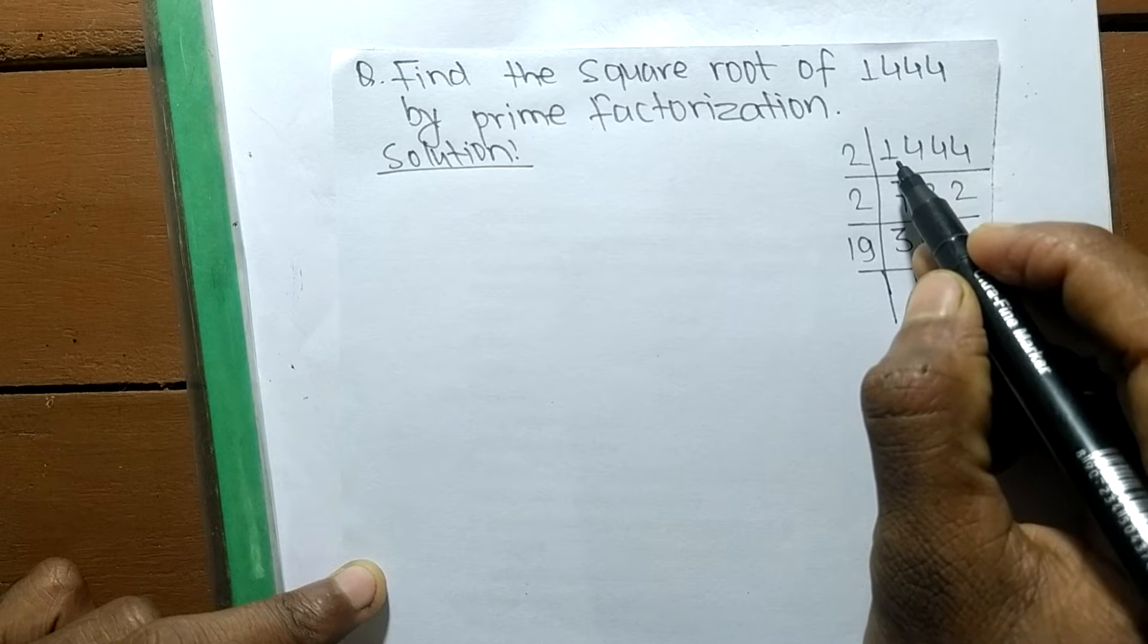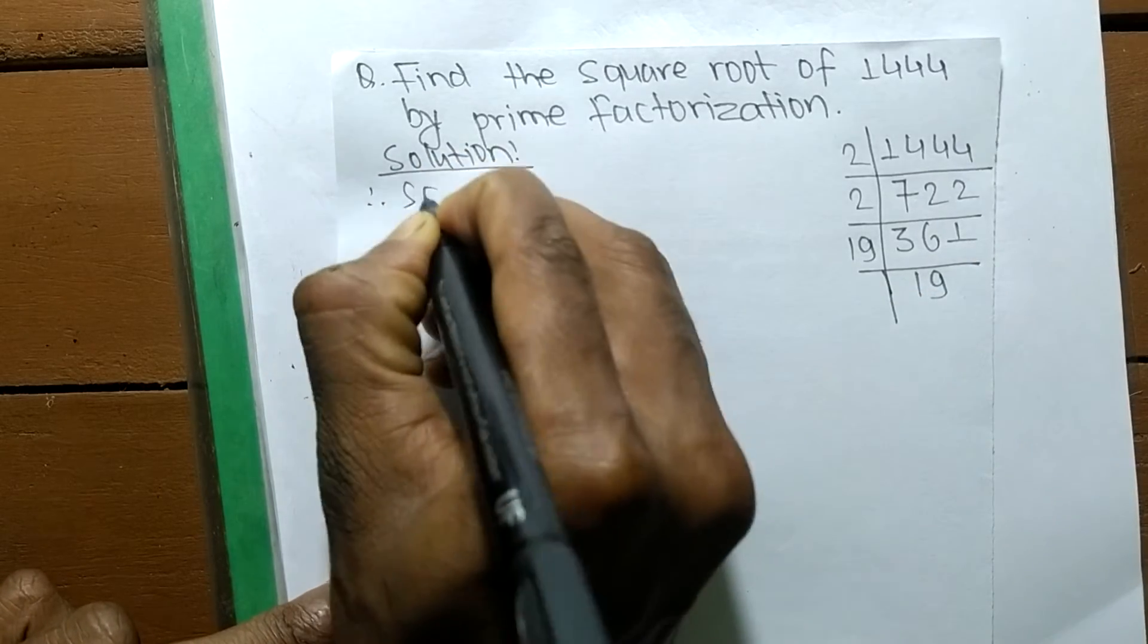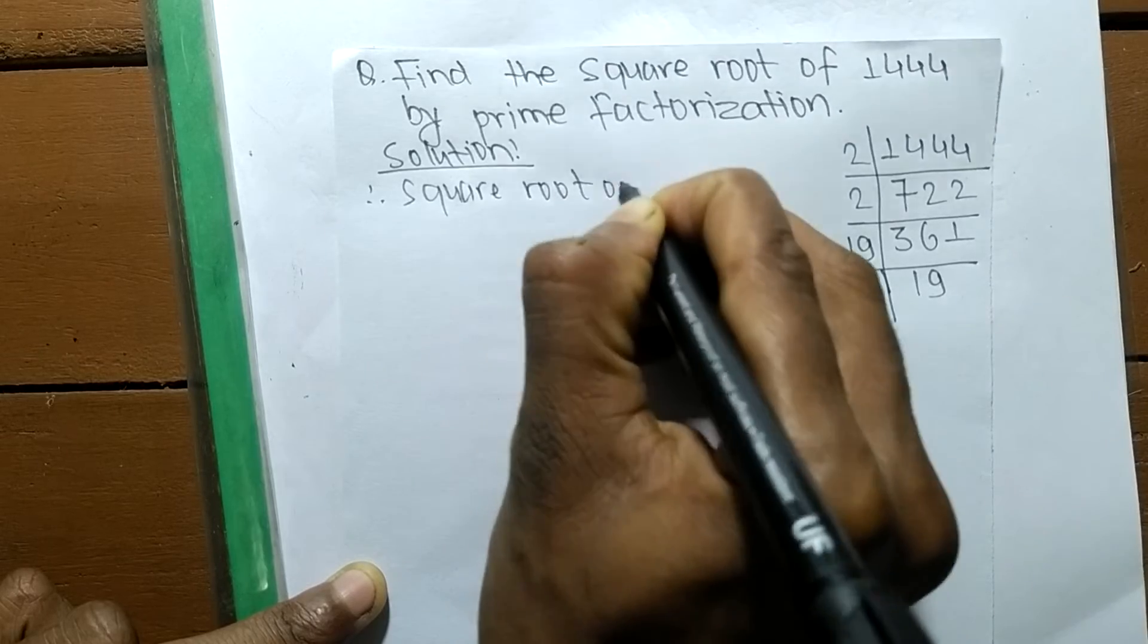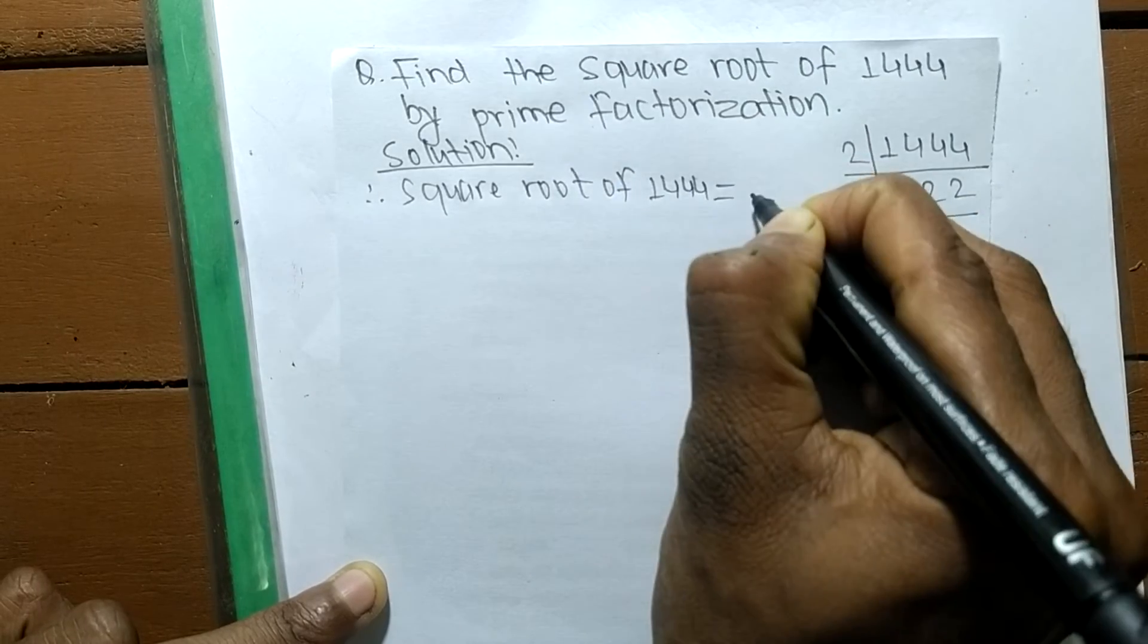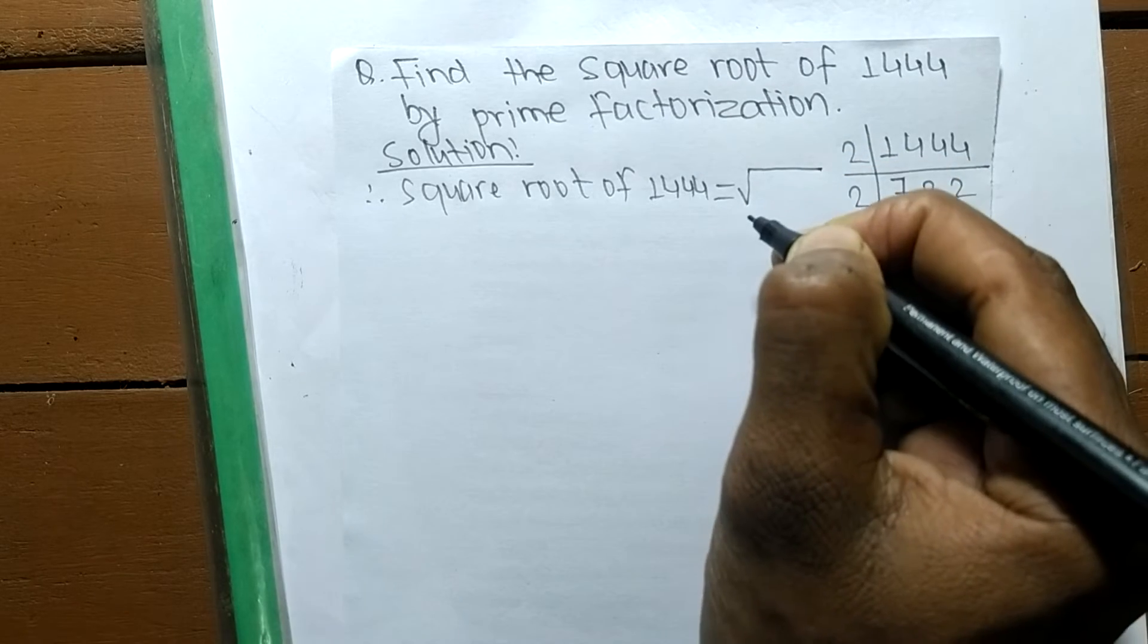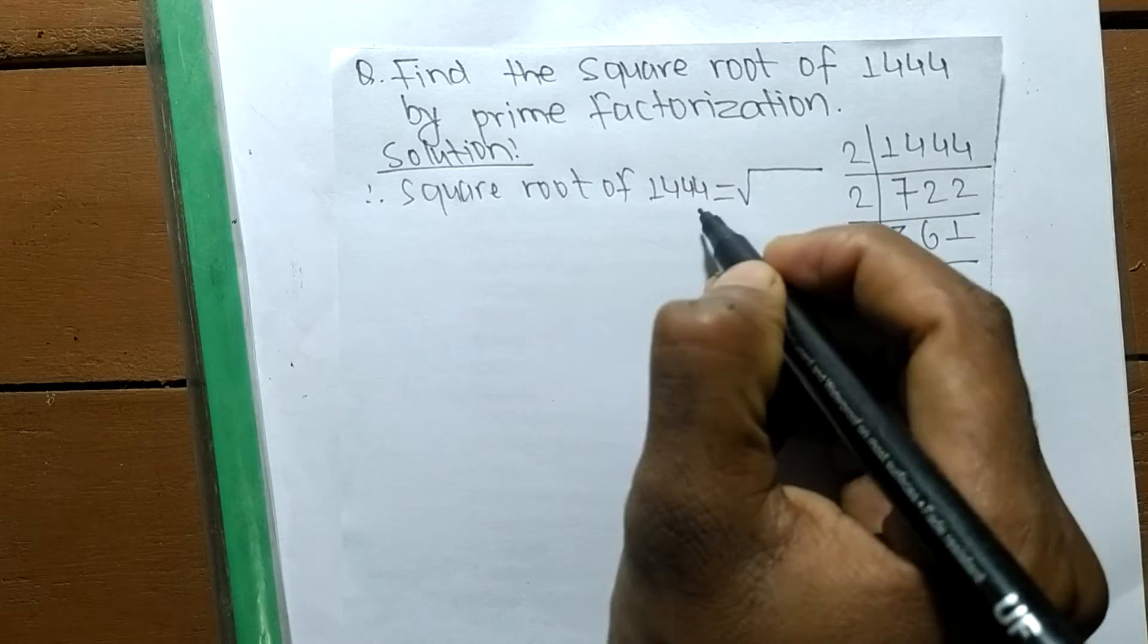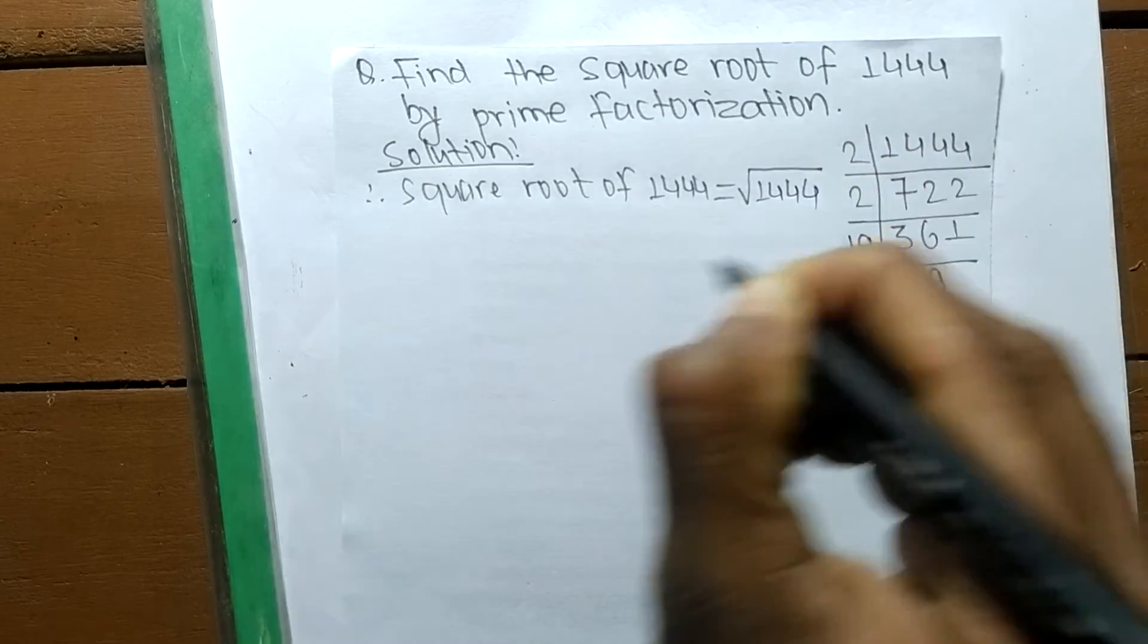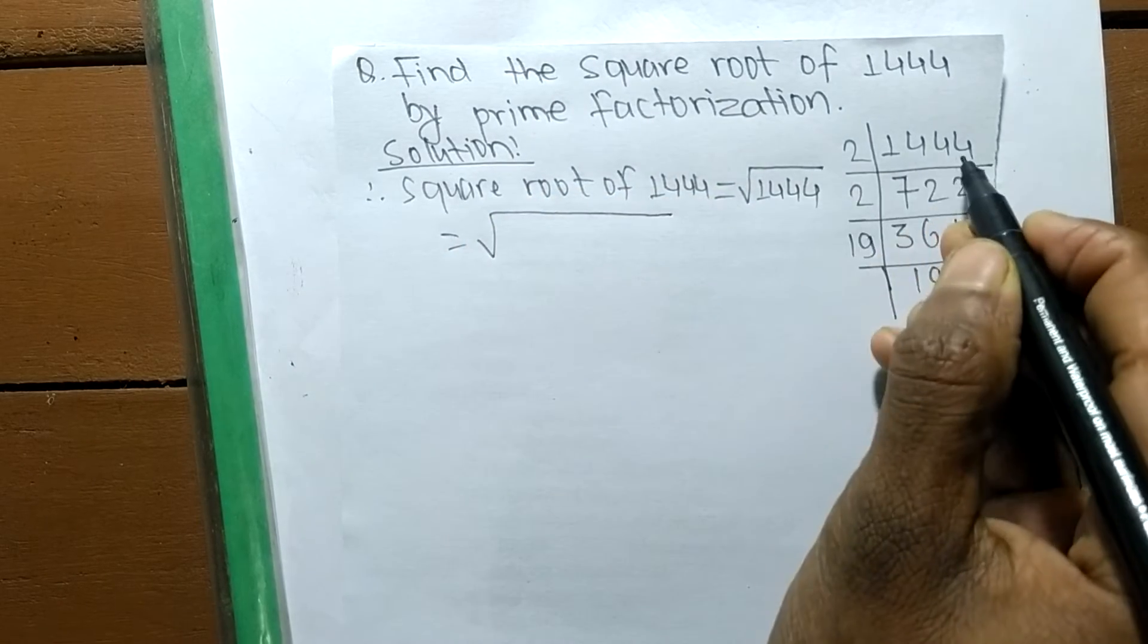So we are finding a square root, so a square root of 1444. This sign is the sign of a square root and we are finding here the square root of 1444.